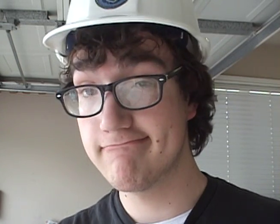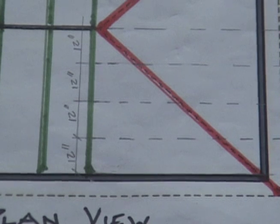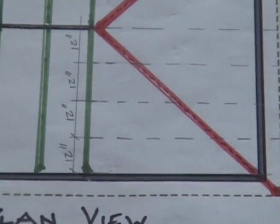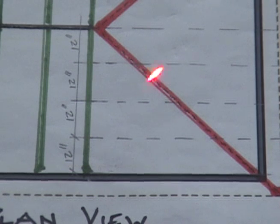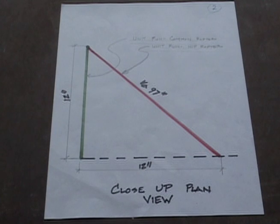Back to the big question: why is the unit run for a hip and valley rafter 17 instead of 12? In this plan view, the 4 equal 12-inch units of run length for the common rafter correspond to 4 equal units of run length for the hip rafter. You'll also notice that these hip rafter units of run are longer than their 12-inch counterpart. Using the Pythagorean theorem, 12 squared plus 12 squared equals 16.97 squared — so rounding 16.97, we get 17 for our hip unit run.